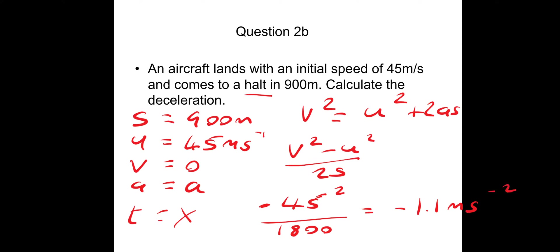The result is minus 1.1 meters per second squared — the negative indicates it is slowing down. Because the question asks for deceleration, we write the deceleration is 1.1 meters per second squared.